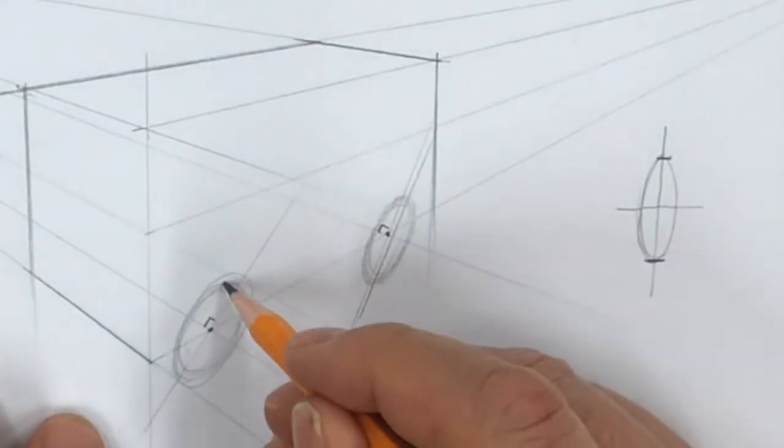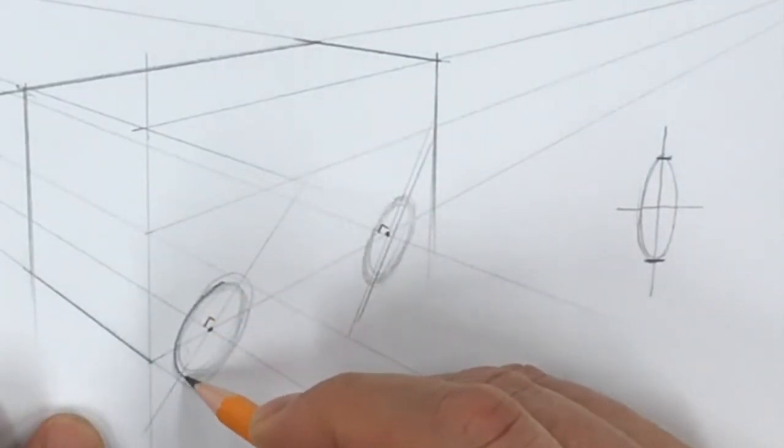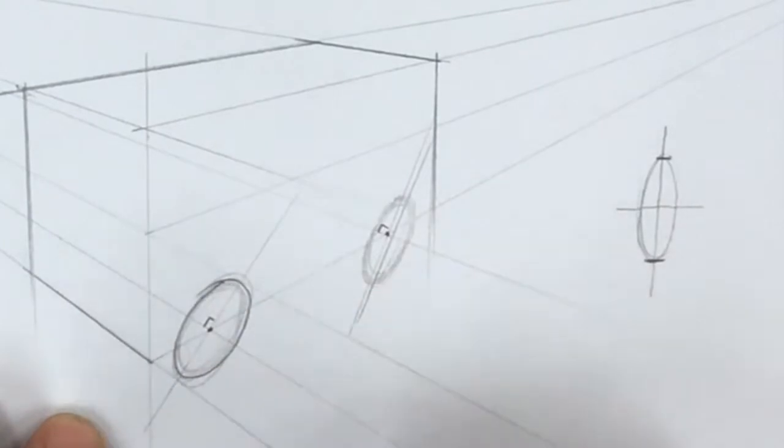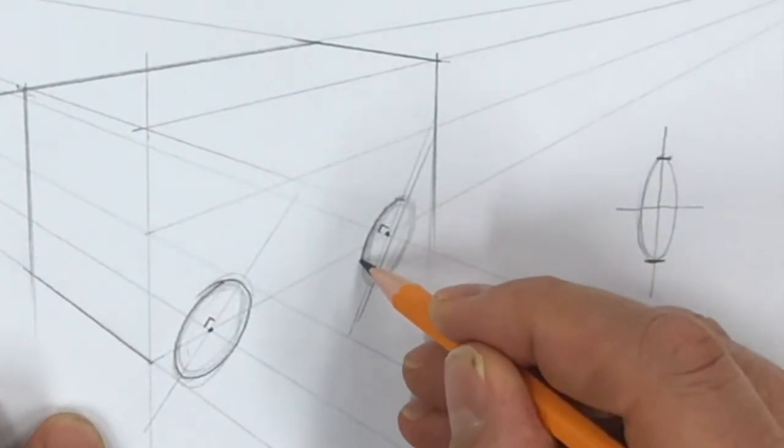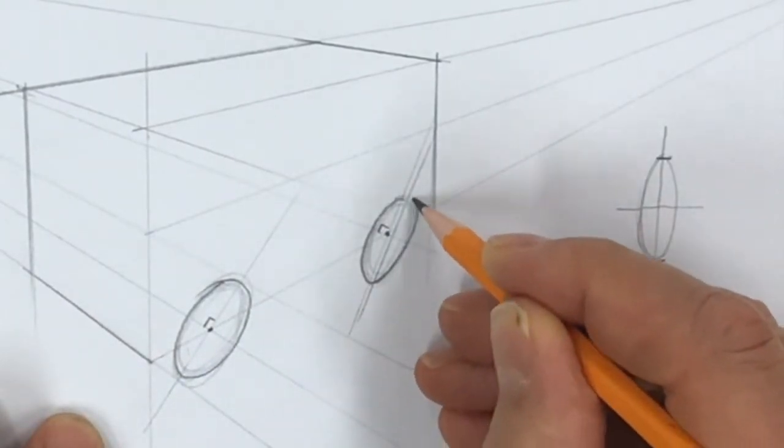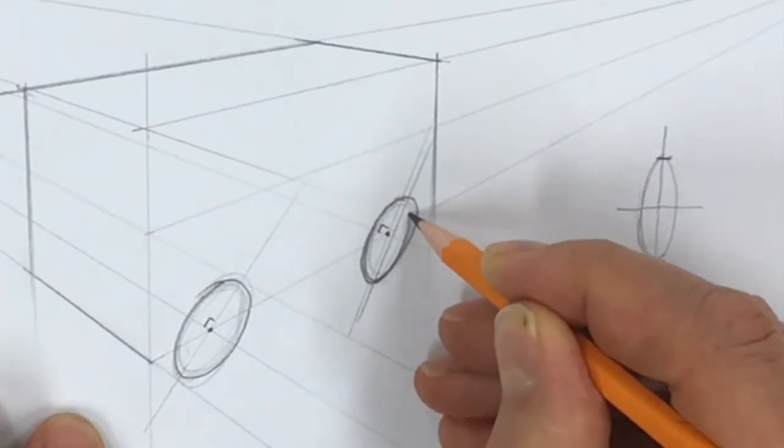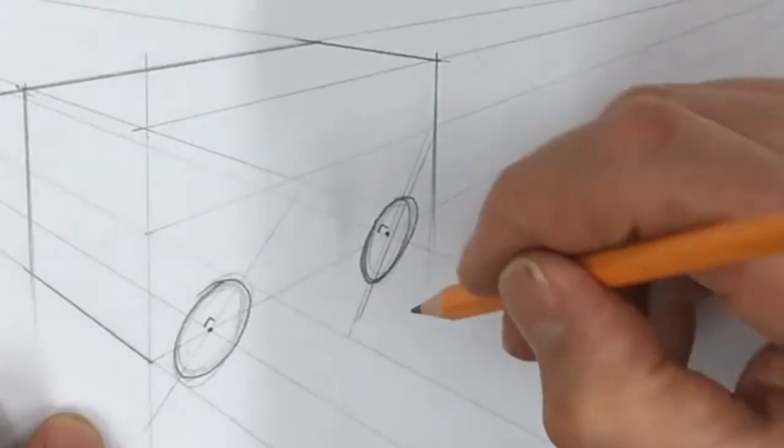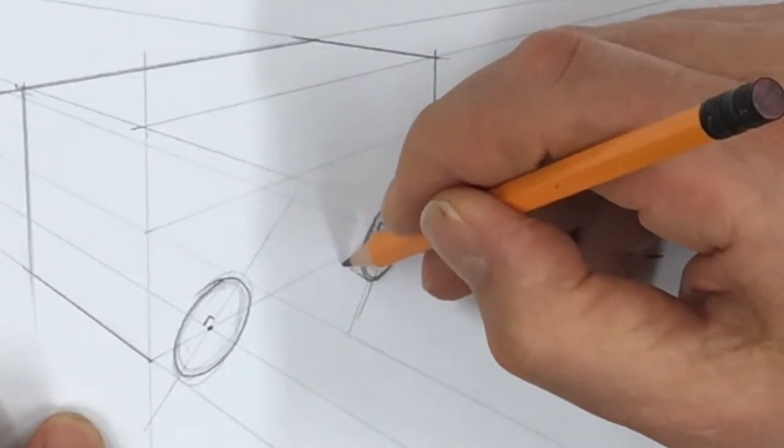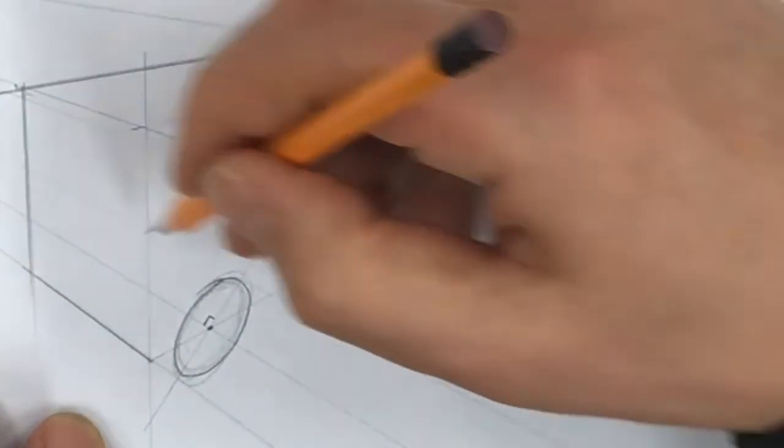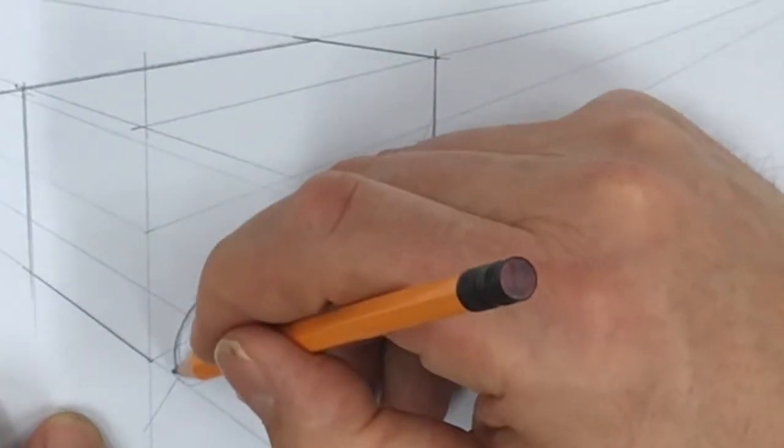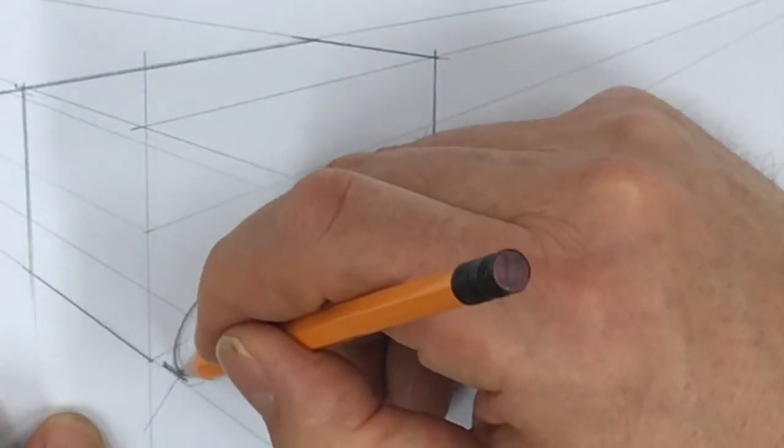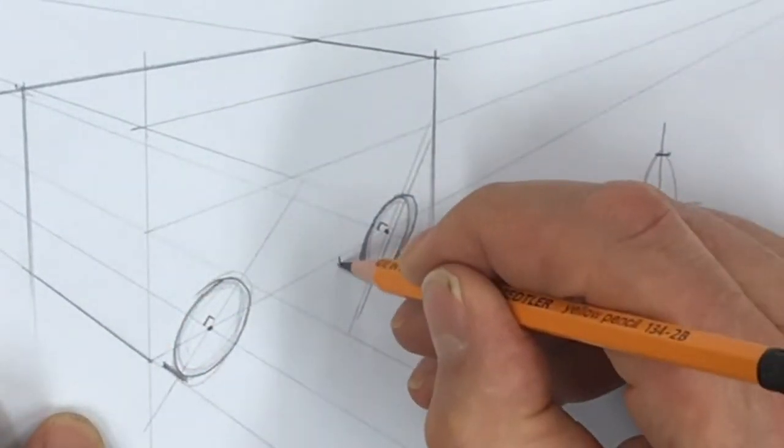Of course they're going to have a thickness, so from that tangent point there I'm going to send a line off towards the vanishing point, and here as well. A line off towards the vanishing point, and then another line just up there like that.